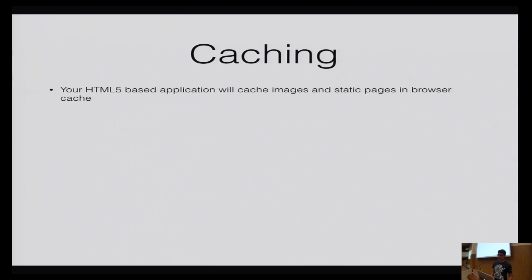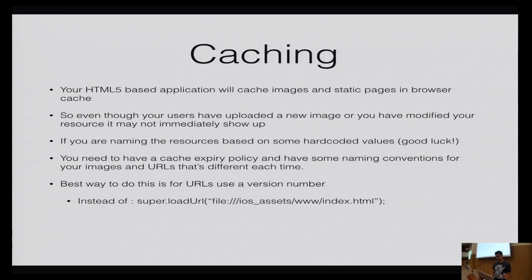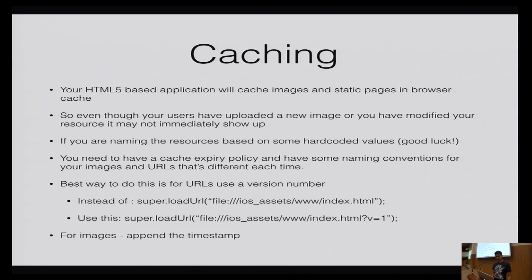HTML5-based applications use the browser to cache URLs or images. If you've uploaded a new image or modified a URL, it probably won't show up immediately. This is why in the previous Facebook app, someone else's photo might appear on someone's profile, or an updated profile picture isn't displayed immediately. To avoid this, use a version number in your URLs or append a timestamp to images so newer content can be loaded, rather than relying on stale browser cache.